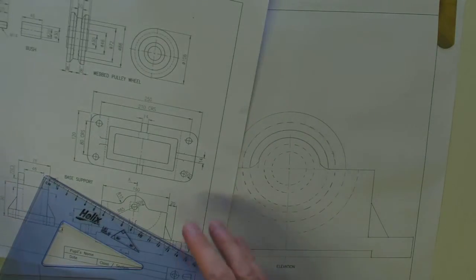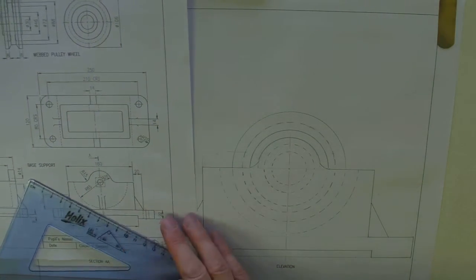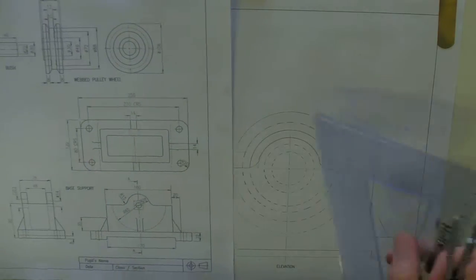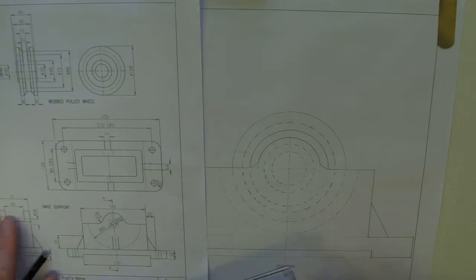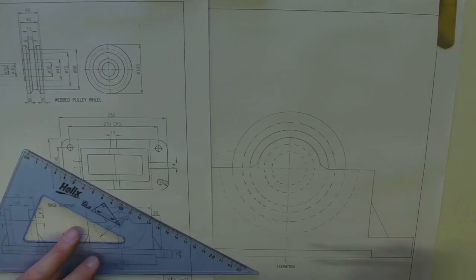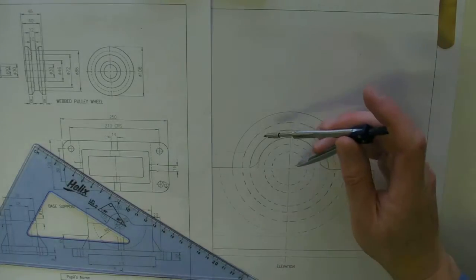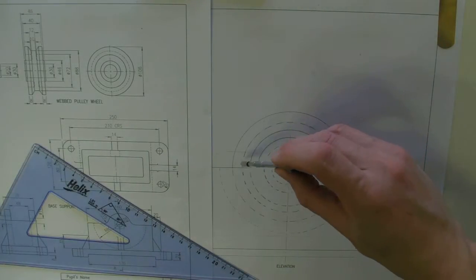So we've got all the circles done. Right, so that's what we'd see of the pulley, right? I would like to make this outline a bit darker.